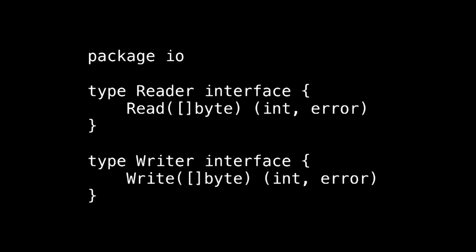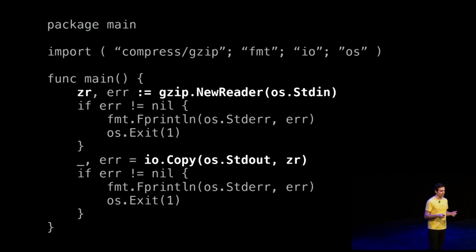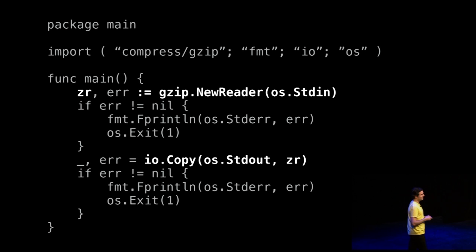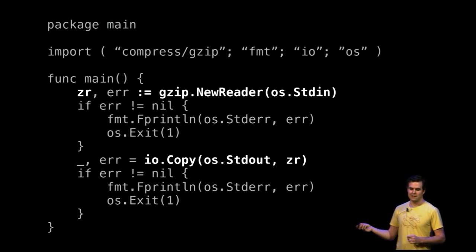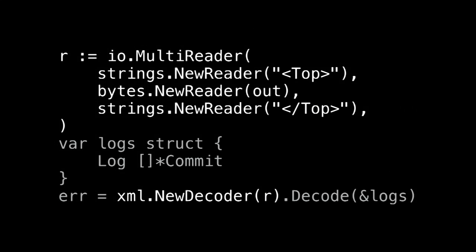If you take the reader and writer interfaces — the streams of binary data in Go — we have all these different implementations like network connections, files, compressors, decompressors, and so on. In this program, I have a gzip reader that reads from standard input, and then I copy the unzipped standard input to standard output — just an implementation of gunzip. We're seeing the composition of three different interfaces connected by functions like io.Copy. Another example: I used multi-reader to compose two string readers and a byte reader together to form one stream of XML data.